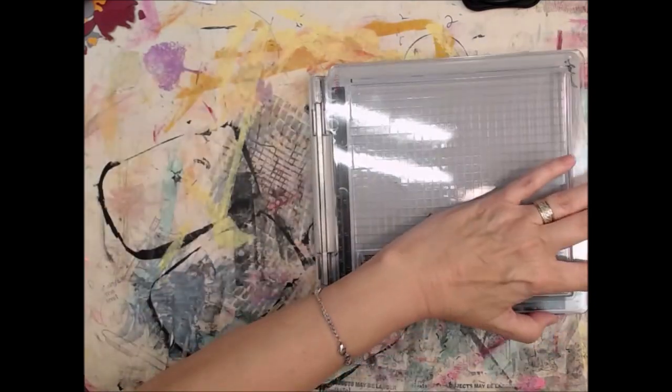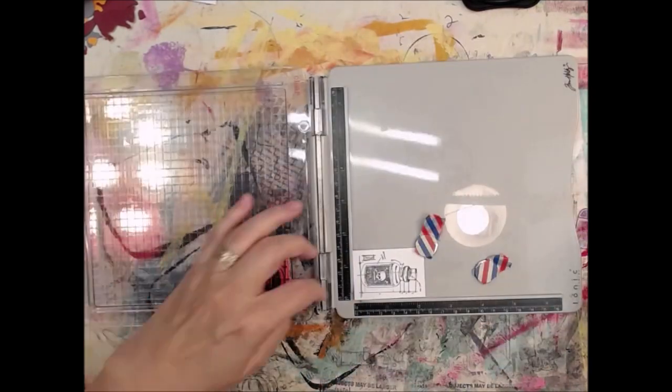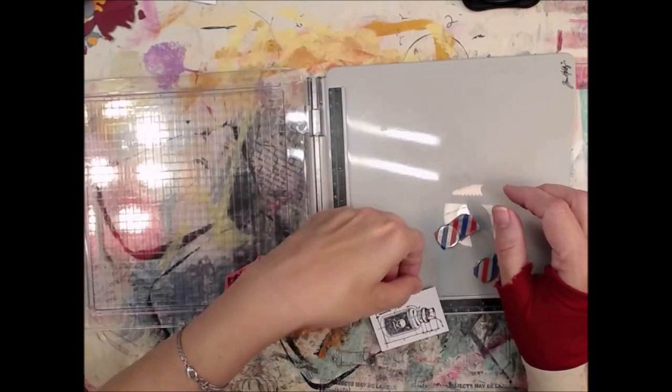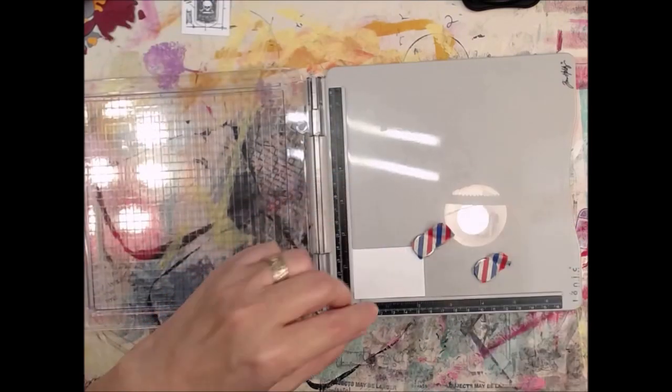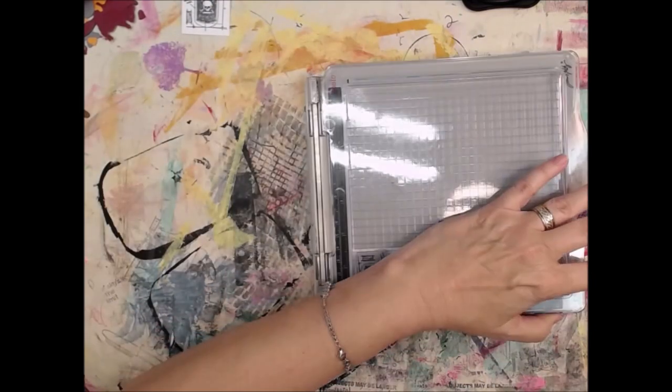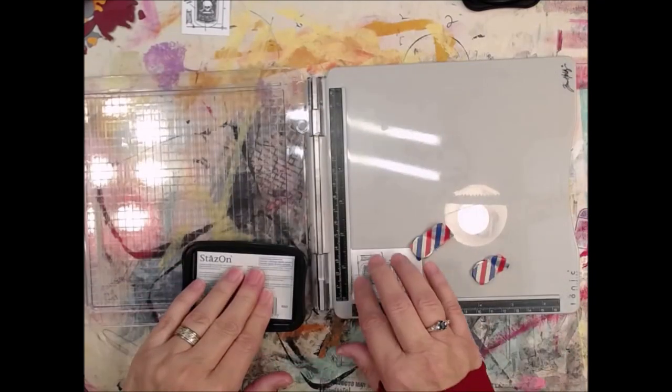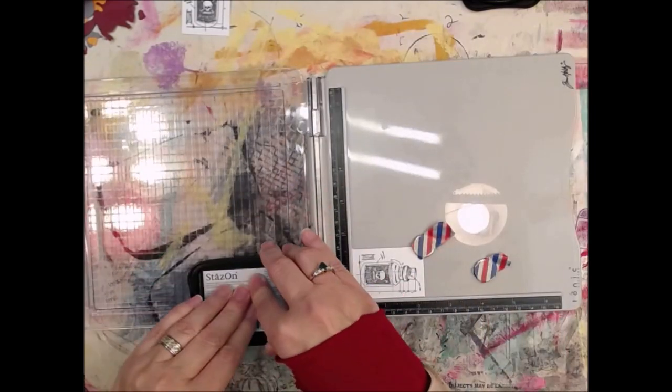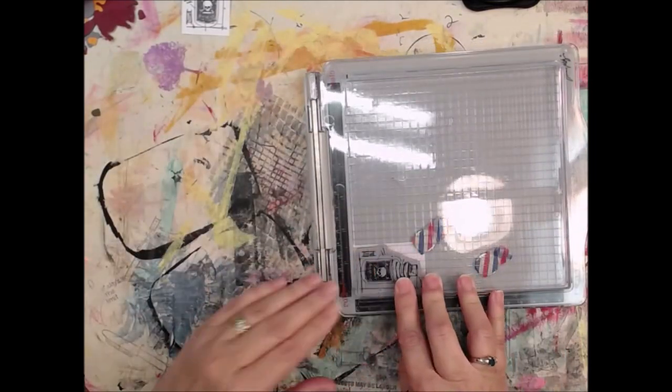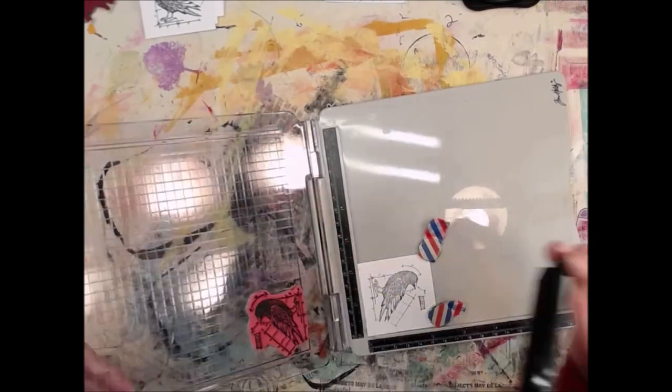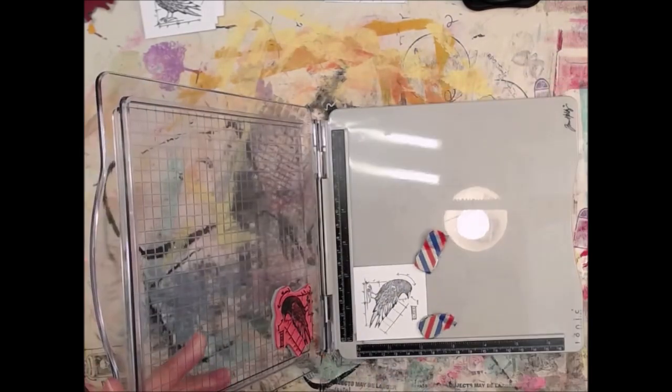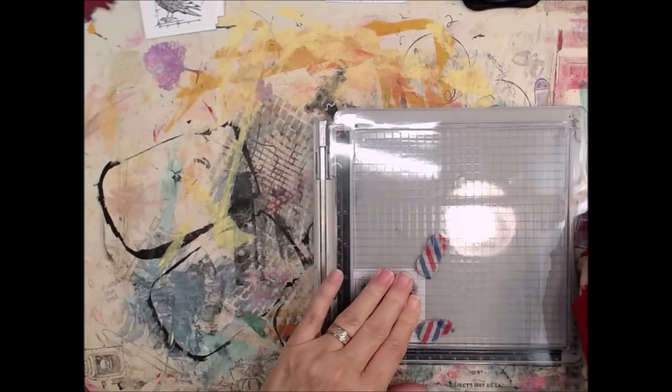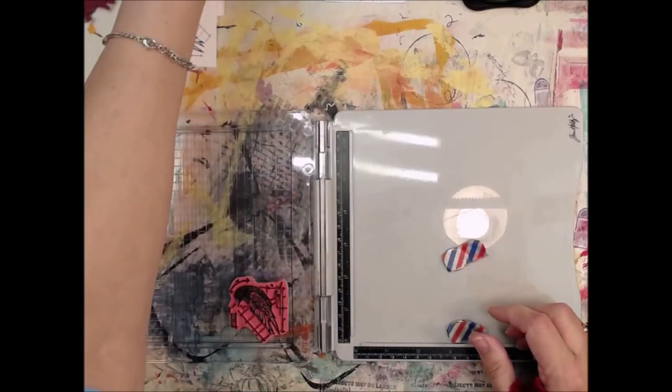So I'm using the StazOn ink pad for my stamping buddy plate platform thing because my big archival ink pad is very difficult to use on this. There is a list of ingredients in the description box below. Some of the stamps I use later on I have no clue where they're from, just saying.